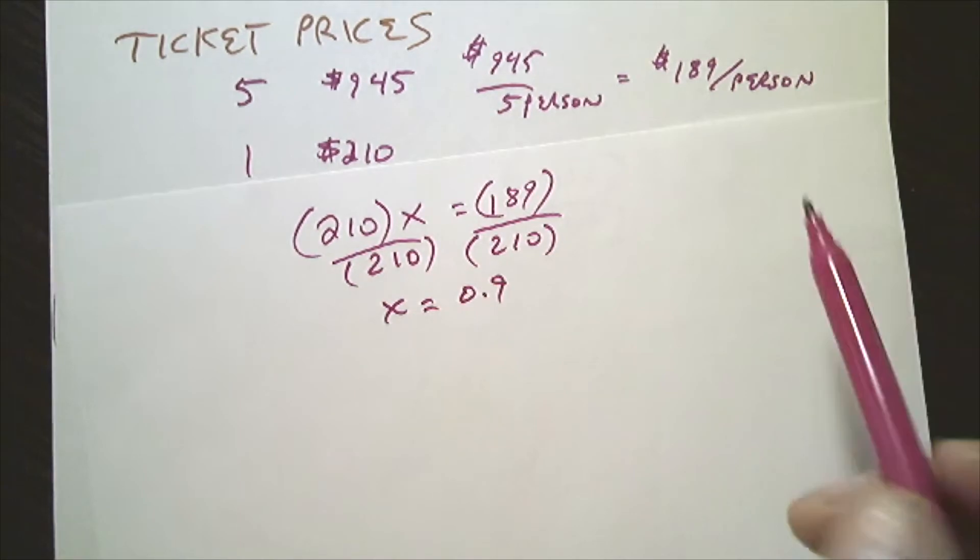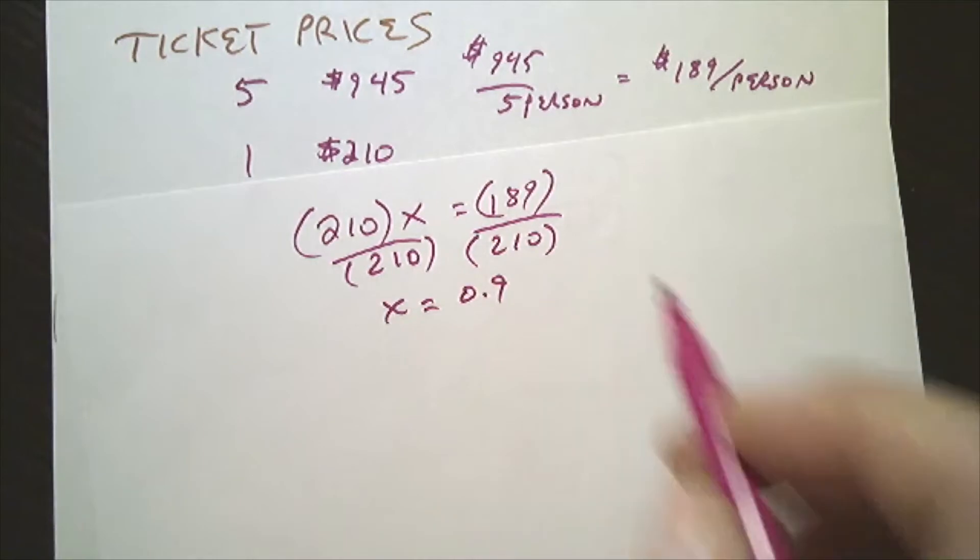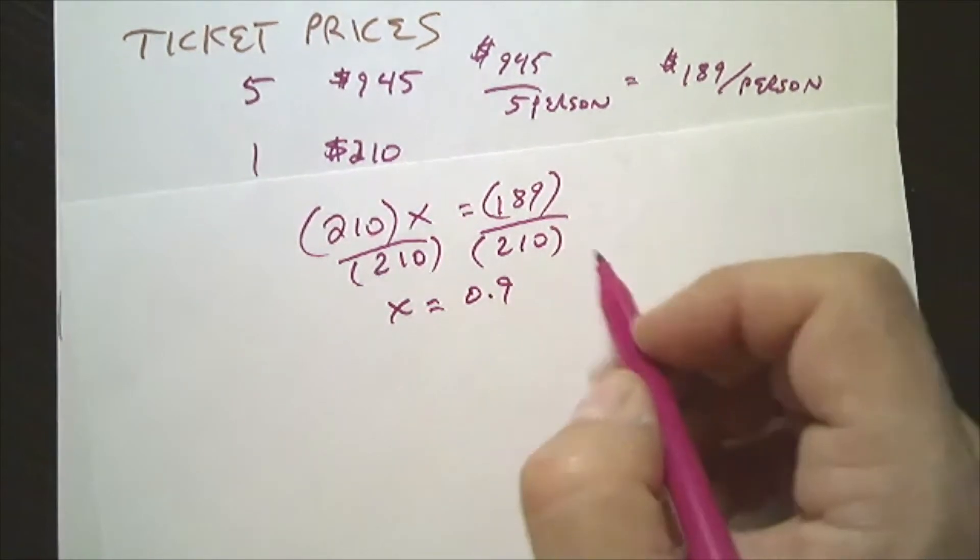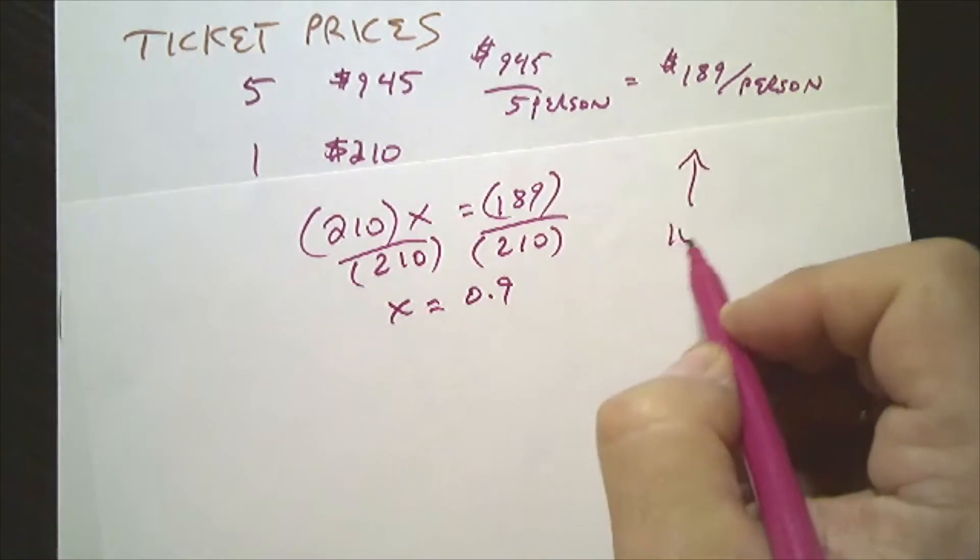So how much smaller is that? That looks like from the full amount, that would be 10% less. So that would be a granted discount of 10%.